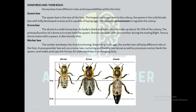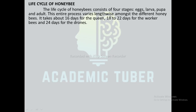Next is the worker bee. The worker bee keeps the hive functioning. Depending on its age, the worker bee will play different roles in the hive. The young worker bee acts as a nurse bee, nurturing and feeding bee larvae, processing nectar, feeding the queen, and making and capping the honey. The older worker bee is on foraging duty.